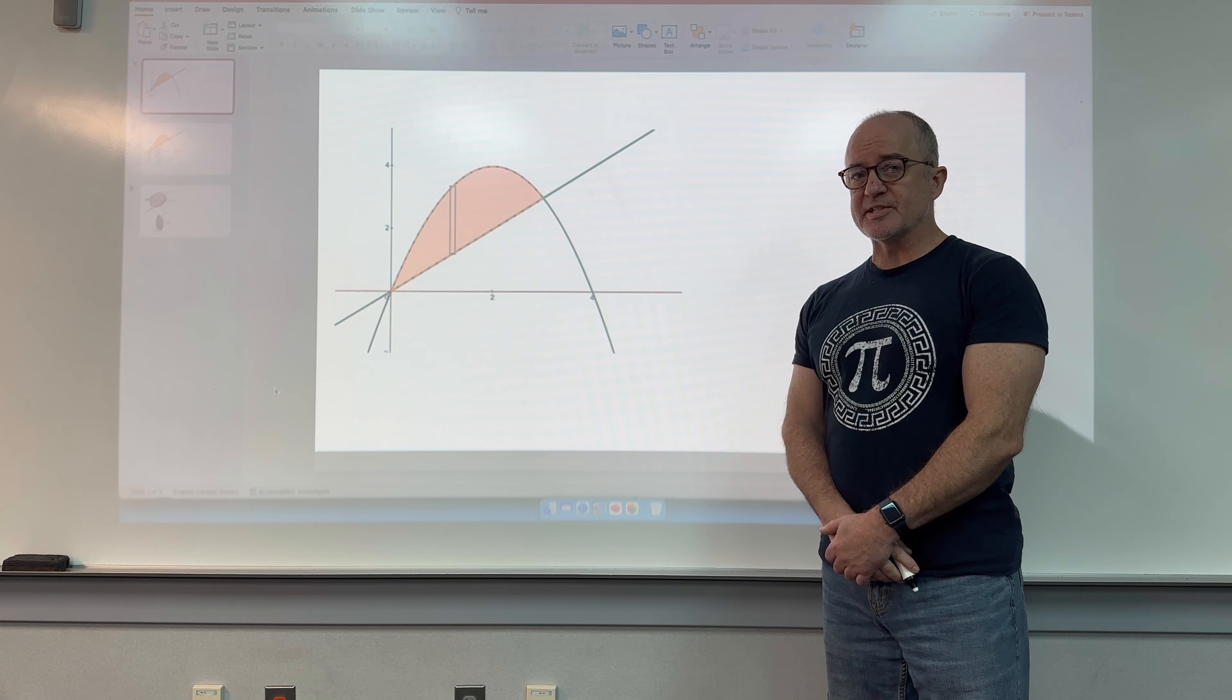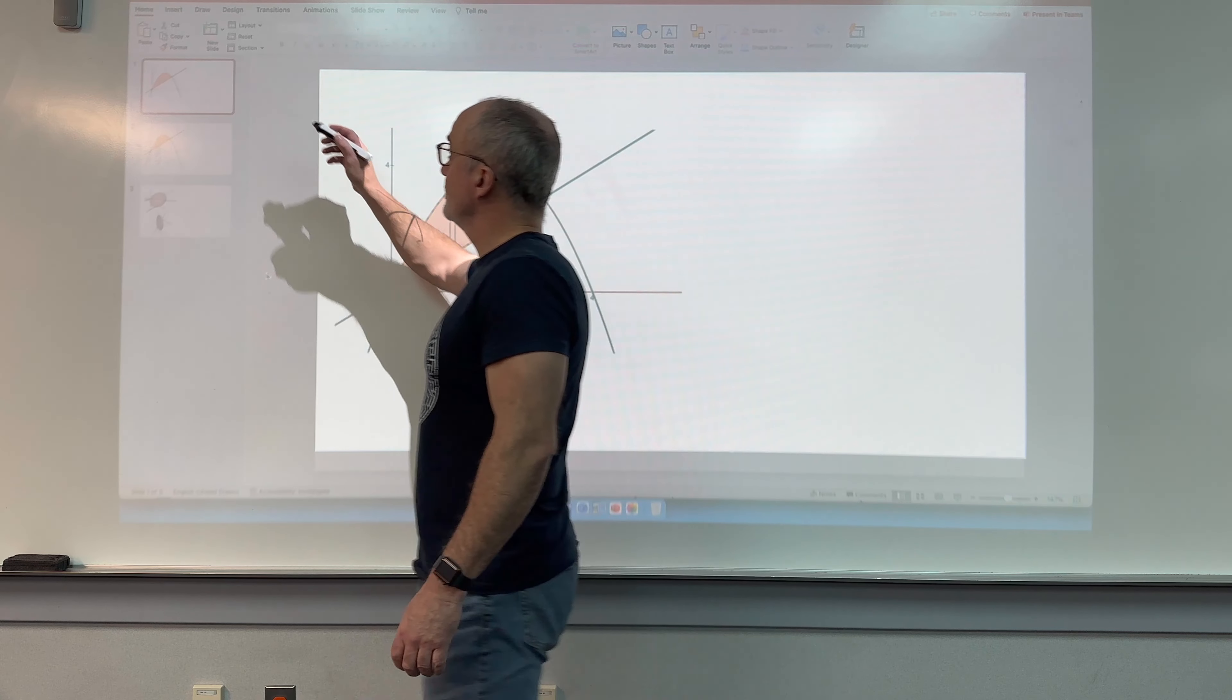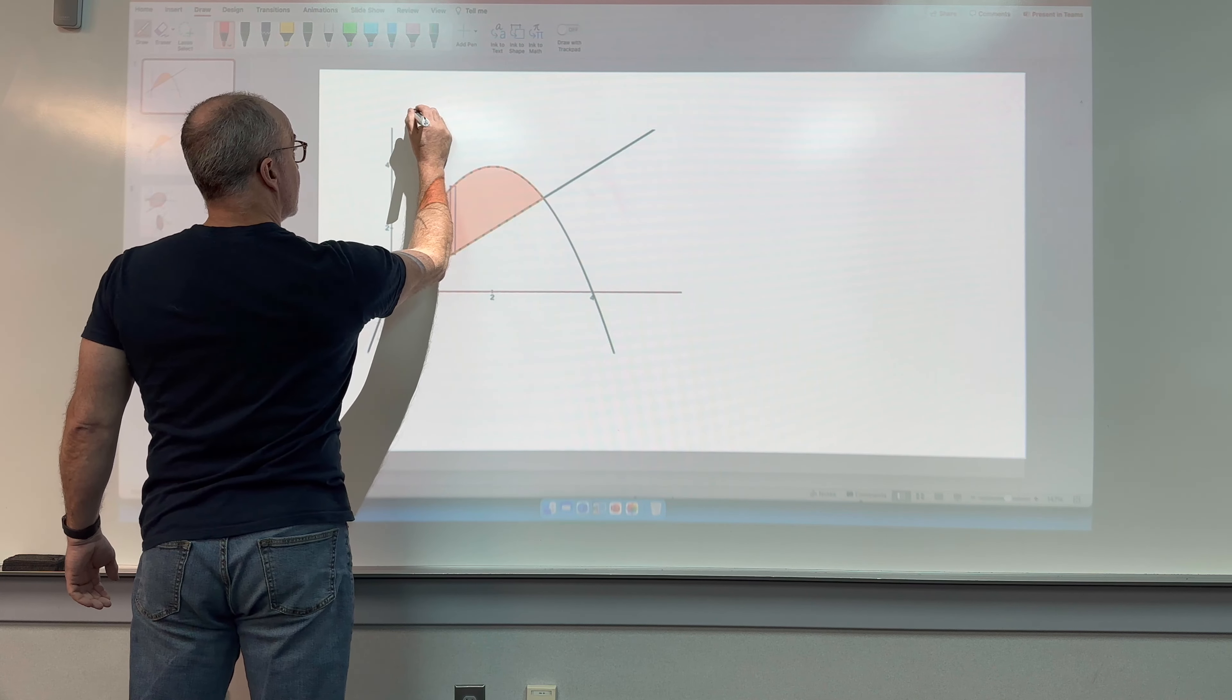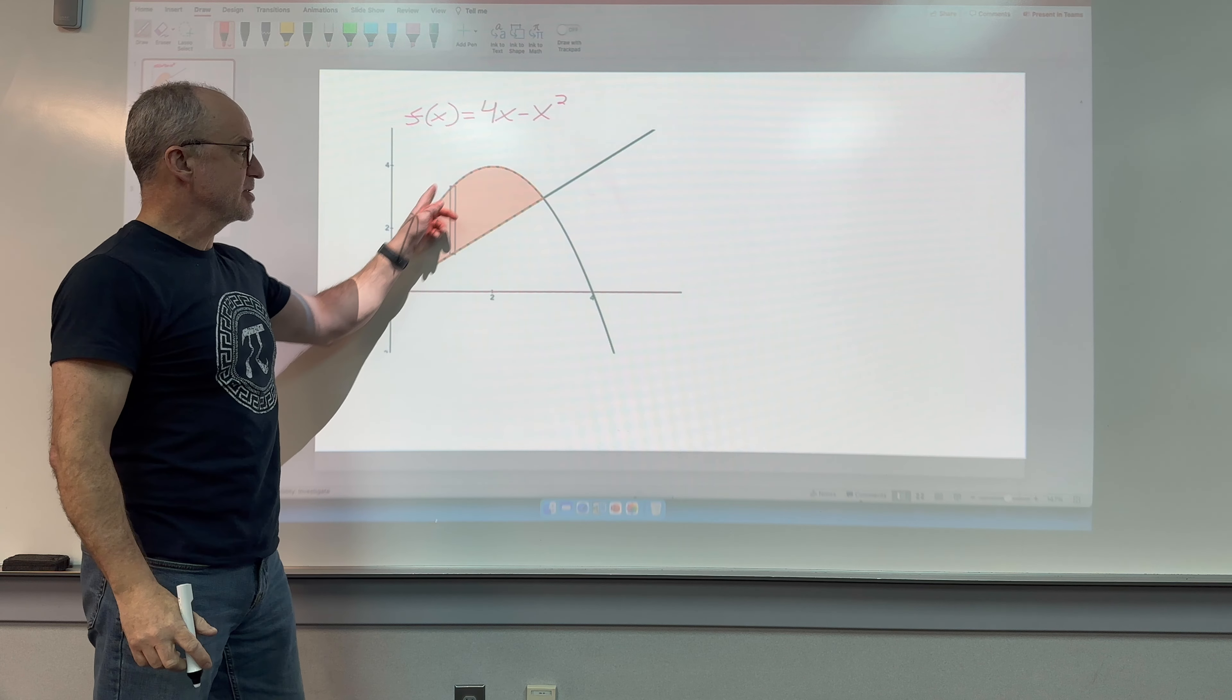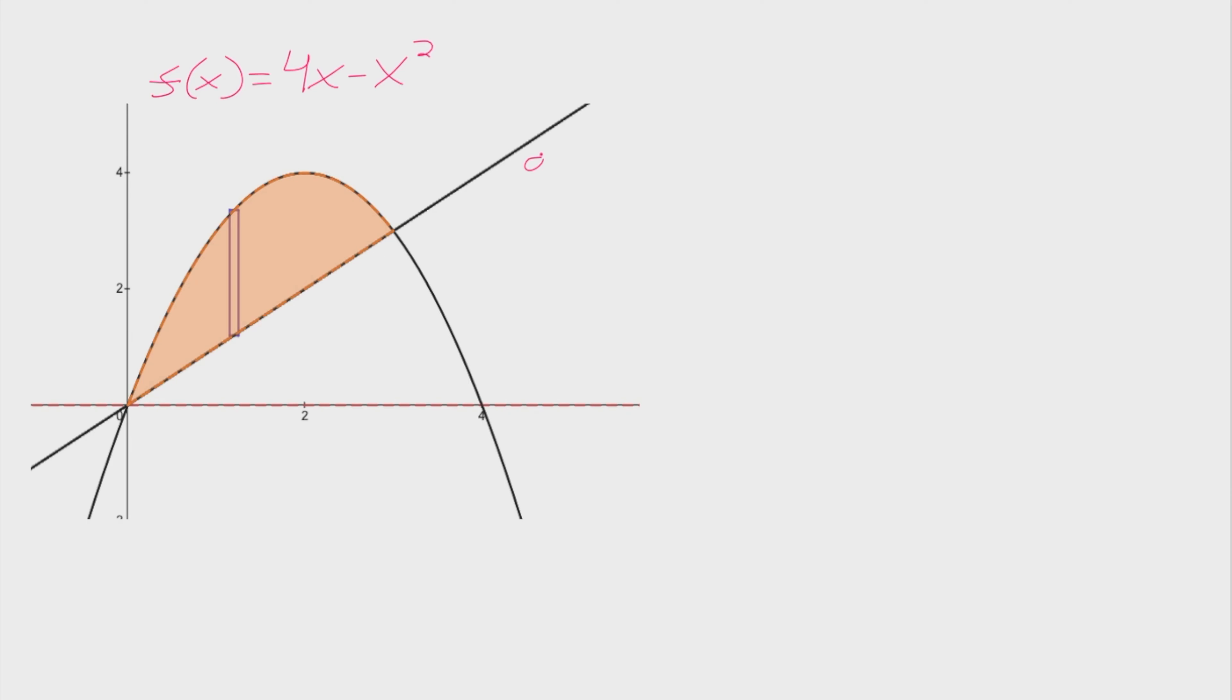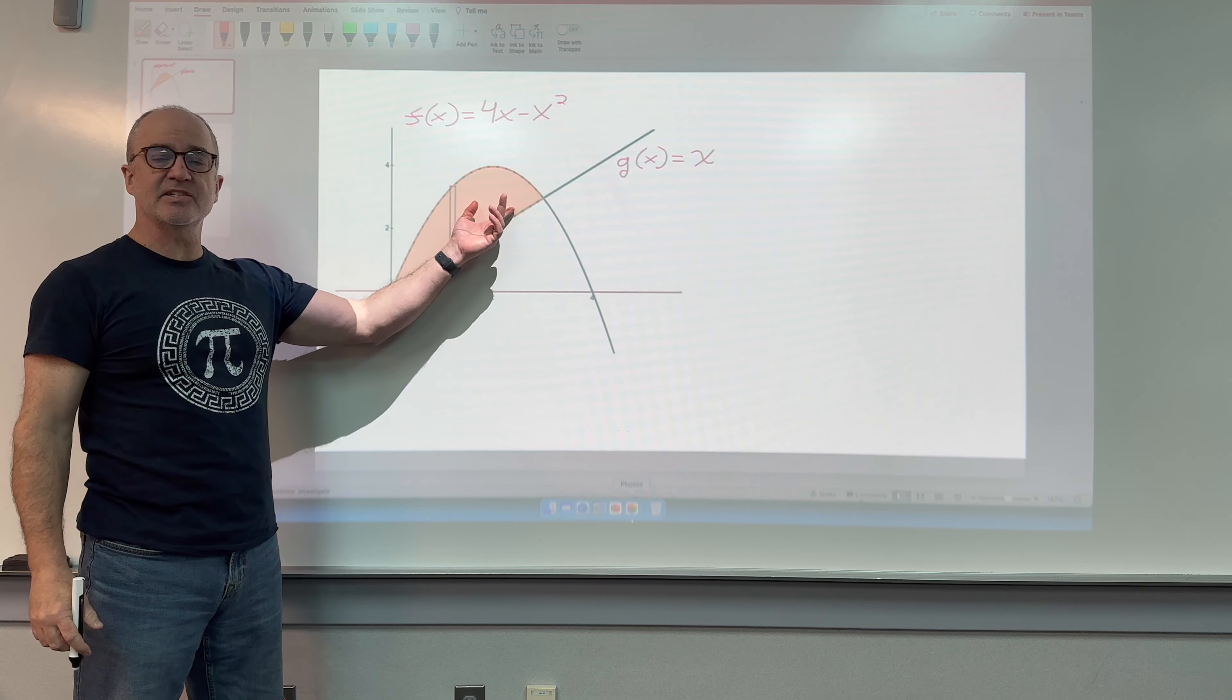Let's go back and review area for one second here. I have two functions here. One of them is from the last video. It is f of x equals 4x minus x squared. That's my frowning parabola here. The other one is this line, g of x, and I told Desmos to graph the line y equals x, so g of x just equals x.